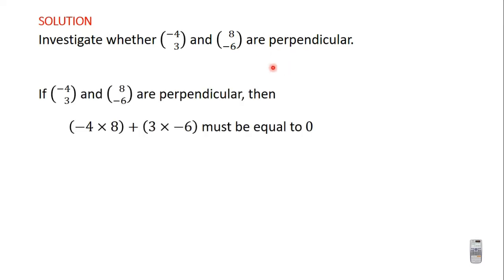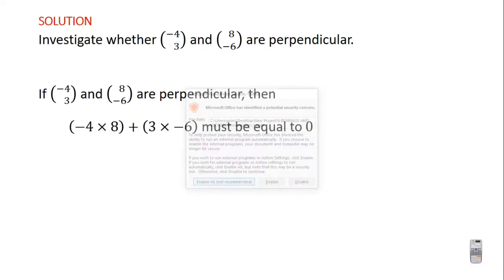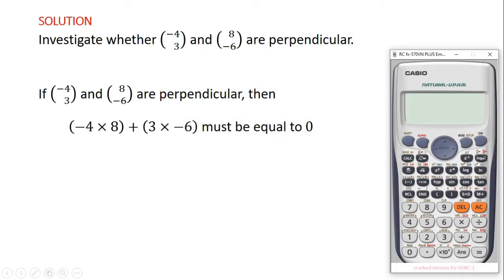We are going to investigate whether (-4, 3) and (8, -6) are two perpendicular vectors. We said that if these two vectors are perpendicular, then minus 4 times 8 plus 3 times minus 6 must be equal to 0.